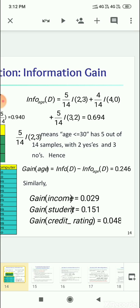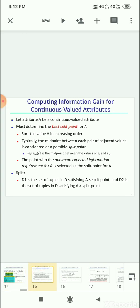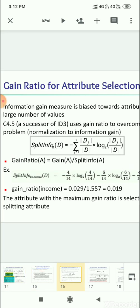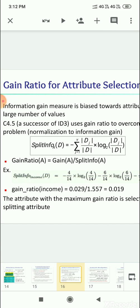Similarly you can find the gain of income, gain of student, and gain of credit rating. So here the gain of income is given as 0.029. And we are putting that result into gain ratio of income is equal to 0.029 by 1.557, which equals 0.019.